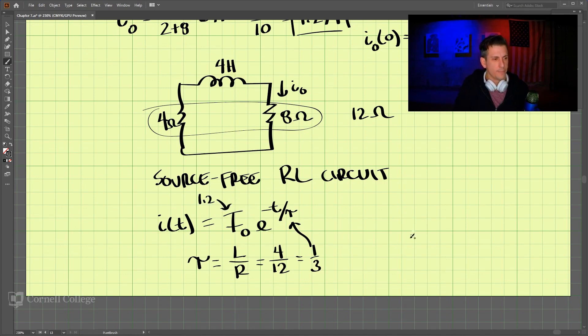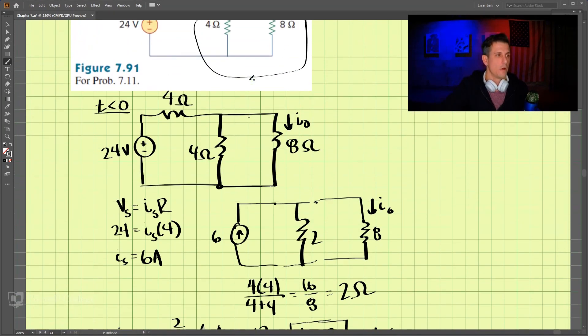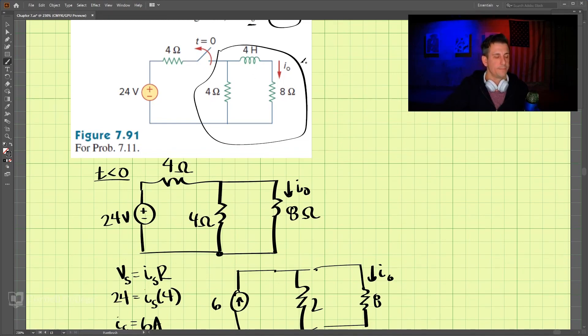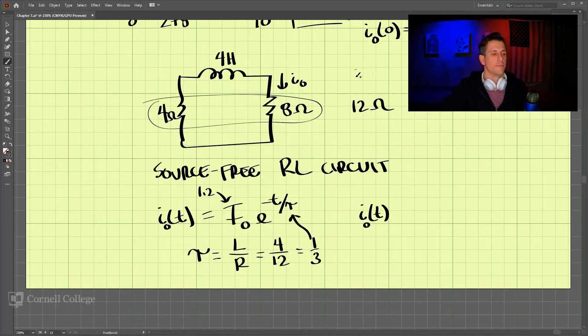So we can put that in here. So our final equation for our current through our I-naught, we have the equation 1.2 amps times E to the negative T divided by one-third, which we can just write as negative 3T. And that is the solution to this problem 7-11.